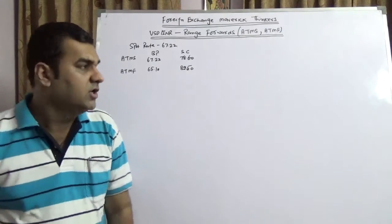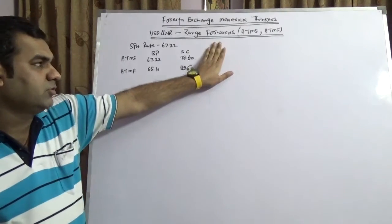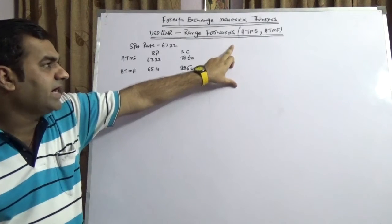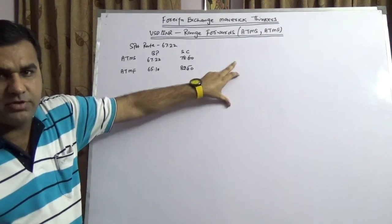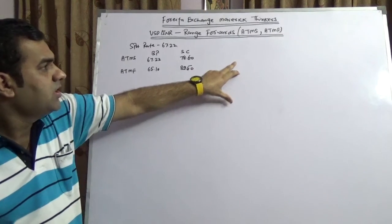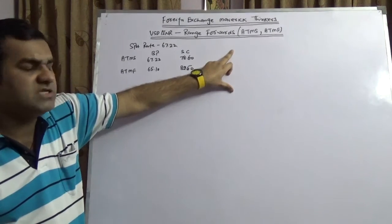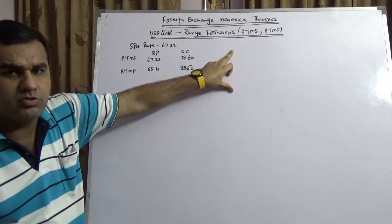I'm not talking about range forward exporters and range forward importers. Today we are going to cover range forward exporters but in two different ways, so we are going to cover at-the-money spot and at-the-money forward. The pricing has been computed using Thomson Reuters Pricer.